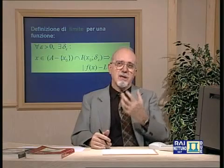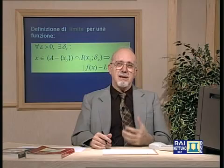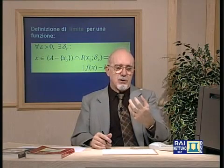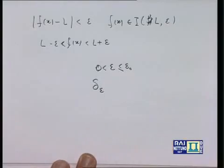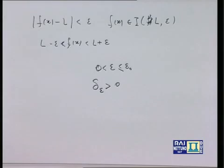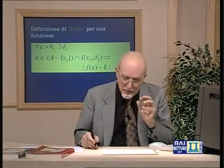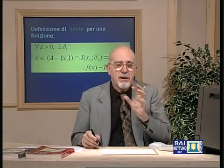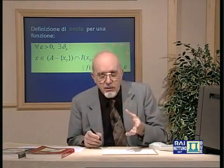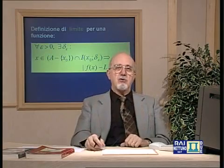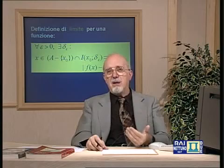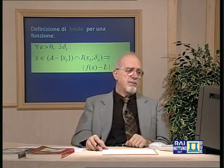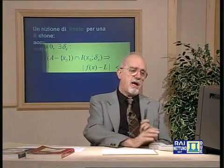Questo gioco a due consiste in un palleggiamento di responsabilità: c'è un primo giocatore che sceglie il bersaglio — l'intorno di L di raggio ε — e un secondo giocatore che deve trovare un intorno di x₀ di raggio δ, dipendente da ε, tale che partendo da un x in quell'intorno, la funzione f(x) colpisca il bersaglio. Il secondo giocatore per vincere deve esibire una strategia vincente per ogni ε positivo.